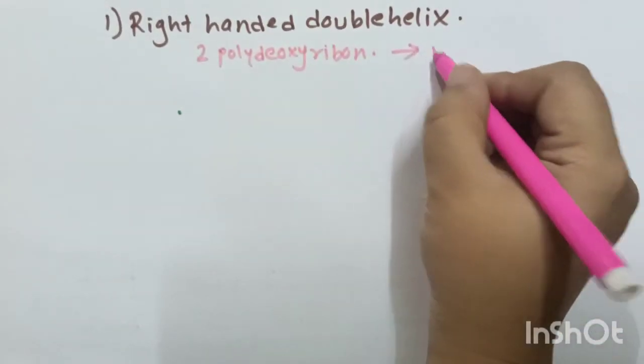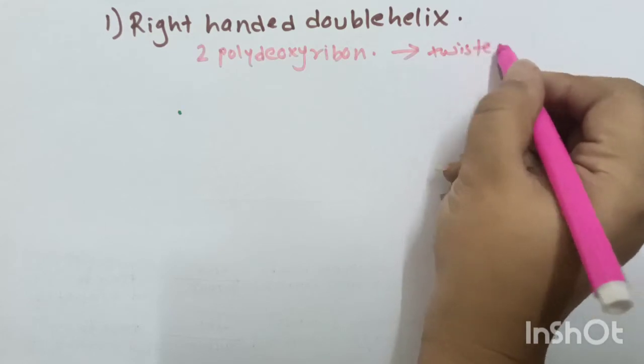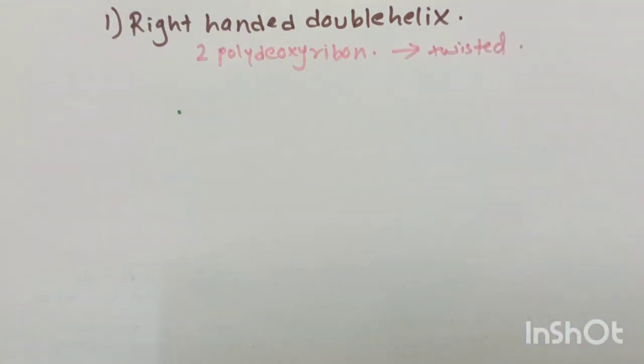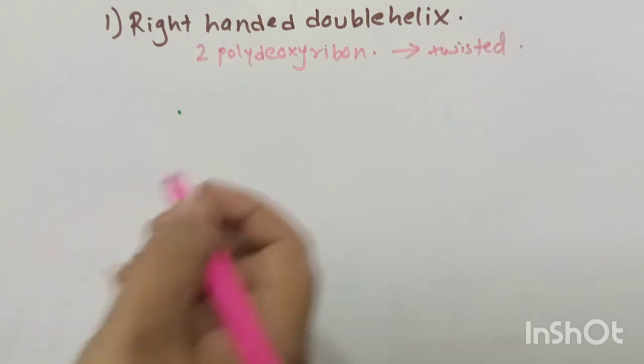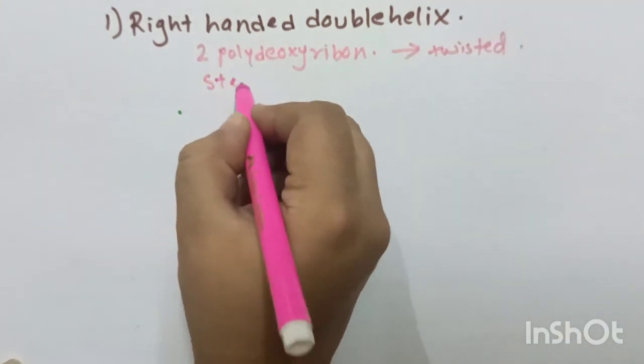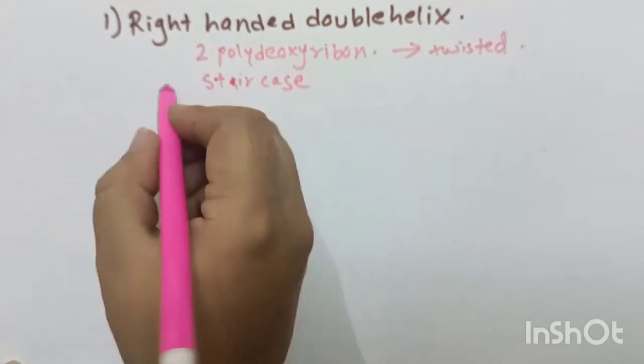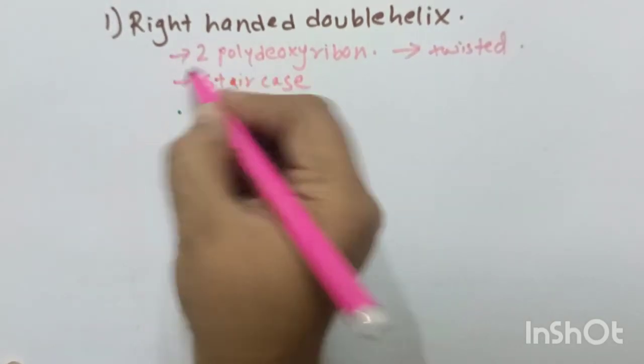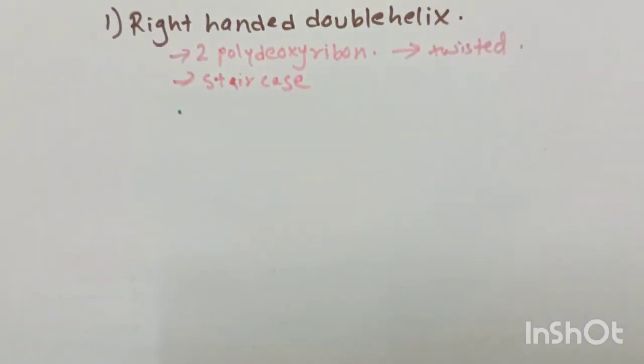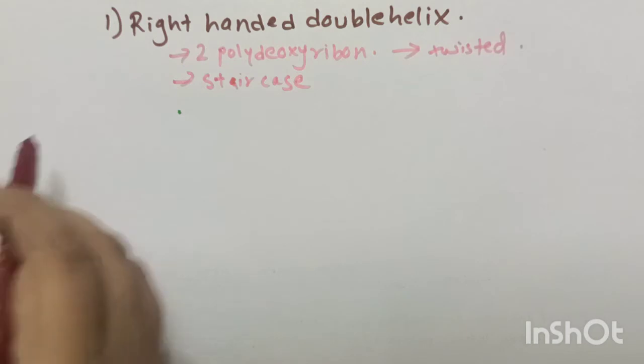Both the chains are twisted around one another in the form of a right-handed double helix, giving an appearance like a spiral staircase.